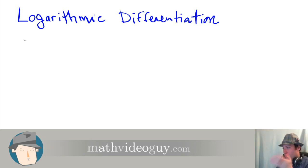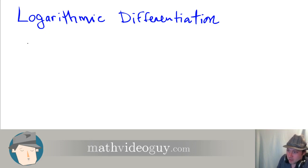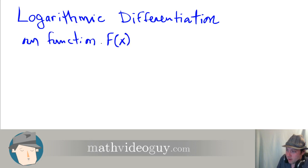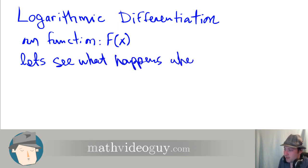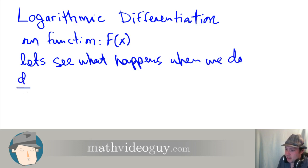So let's go over what is actually happening when you're doing logarithmic differentiation. Suppose we have a function f of x — so our function that we want to take the derivative of is going to be f of x. Let's see what happens when we do d by dx of ln of f of x.